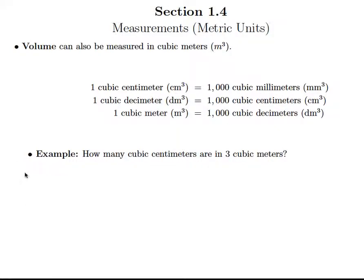So we'll start off with our three cubic meters, and we want to convert to cubic centimeters. Well, we have one cubic meter is the same as 1,000 cubic decimeters—not cubic centimeters, but cubic decimeters.